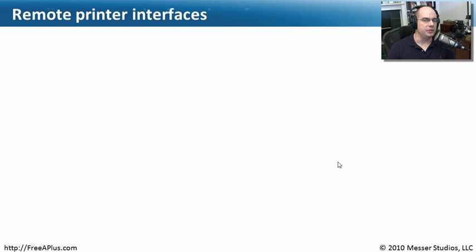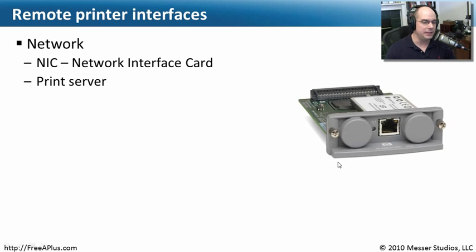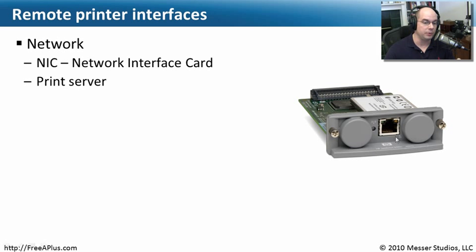In most work environments, you don't have the luxury of having every printer connected to every individual workstation. Usually there's a printer in the center of the room or floor, and people print to that central printer. To do that, we need to connect the printer to the network, and we tend to do that with network interface cards. This is a network interface card that slides right into the back of a Hewlett-Packard printer to set it up as a print server. We just need an Ethernet connection — slide the interface in, plug in Ethernet, and now it's on the network and anybody on the network can print to it.